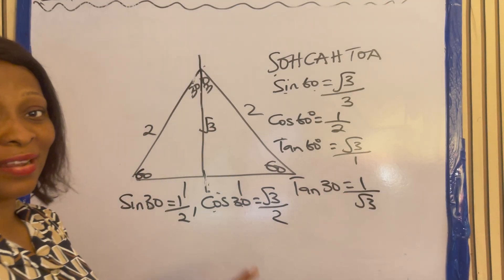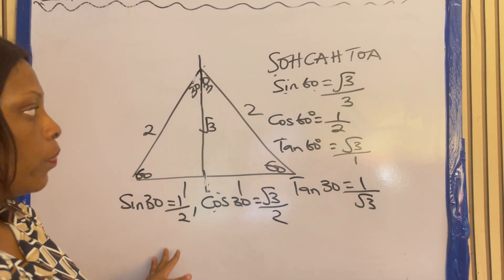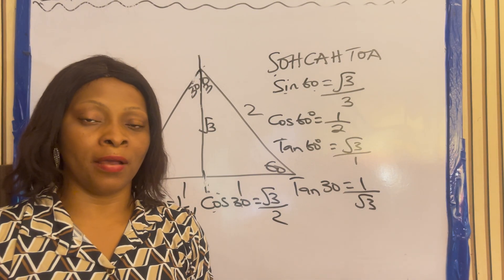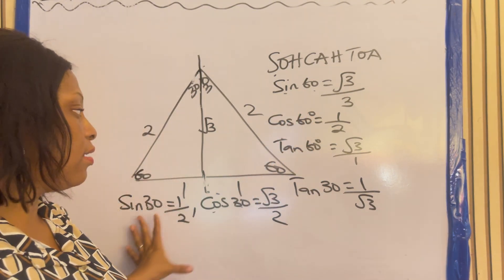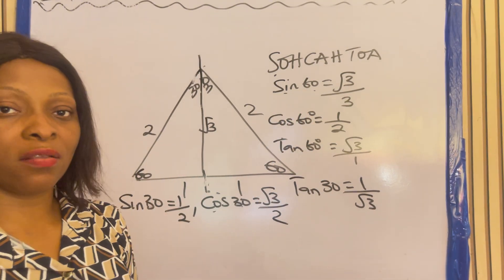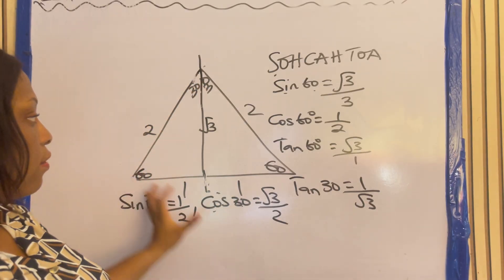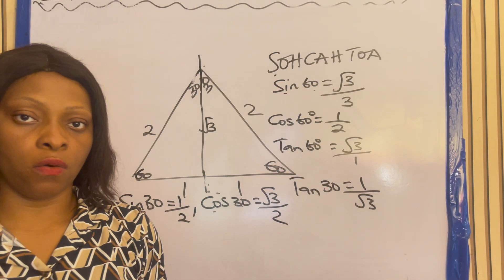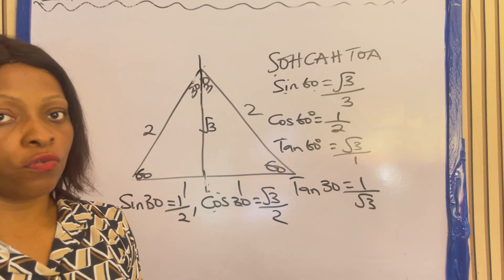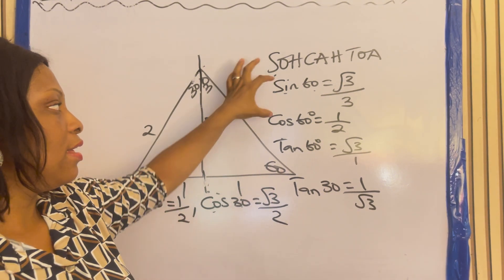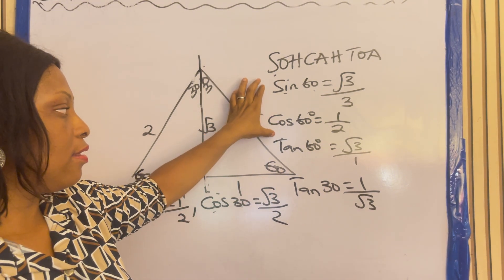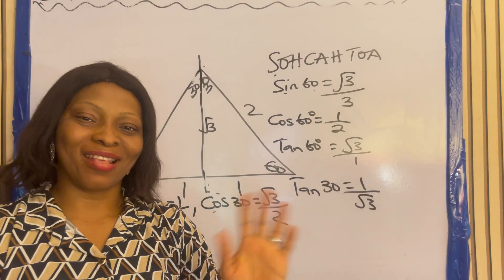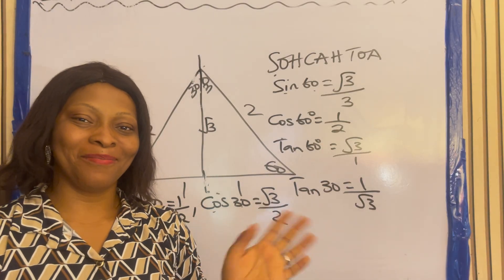Please, you need to master this very, very well, because those of you who will be solving mathematics and physics will need this. So please note them. If you cannot derive them, just simply memorize these values. Anyone they ask you, you'll be able to answer well — especially sin 60, cos 60, sin 30, cos 30. Success in your exam. Bye!